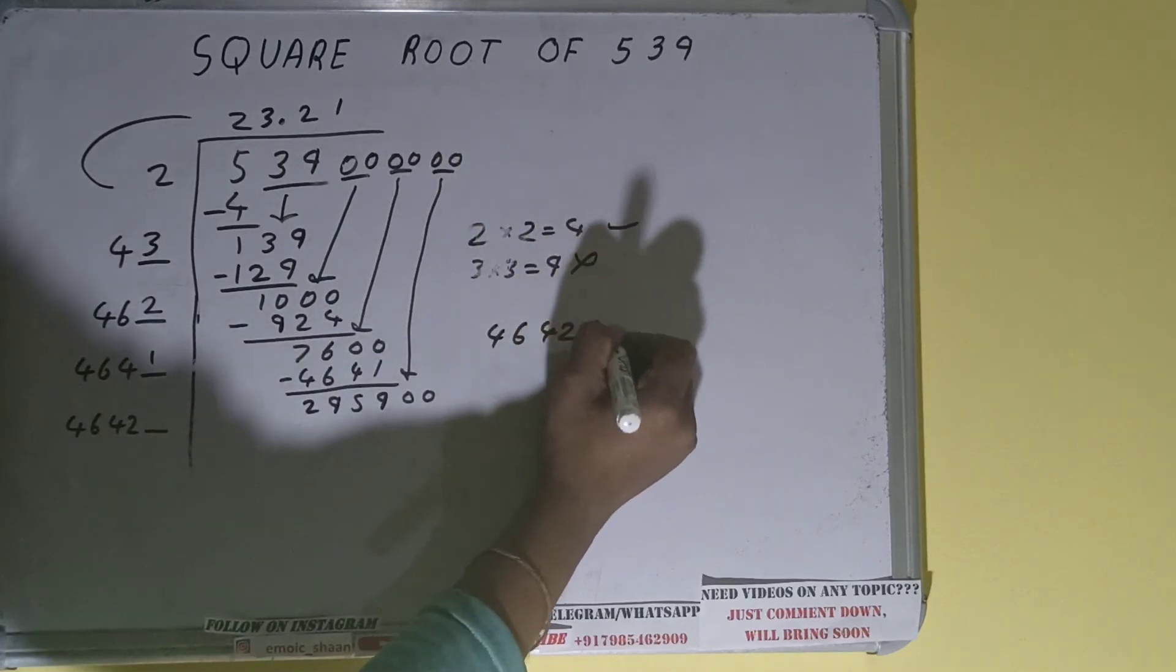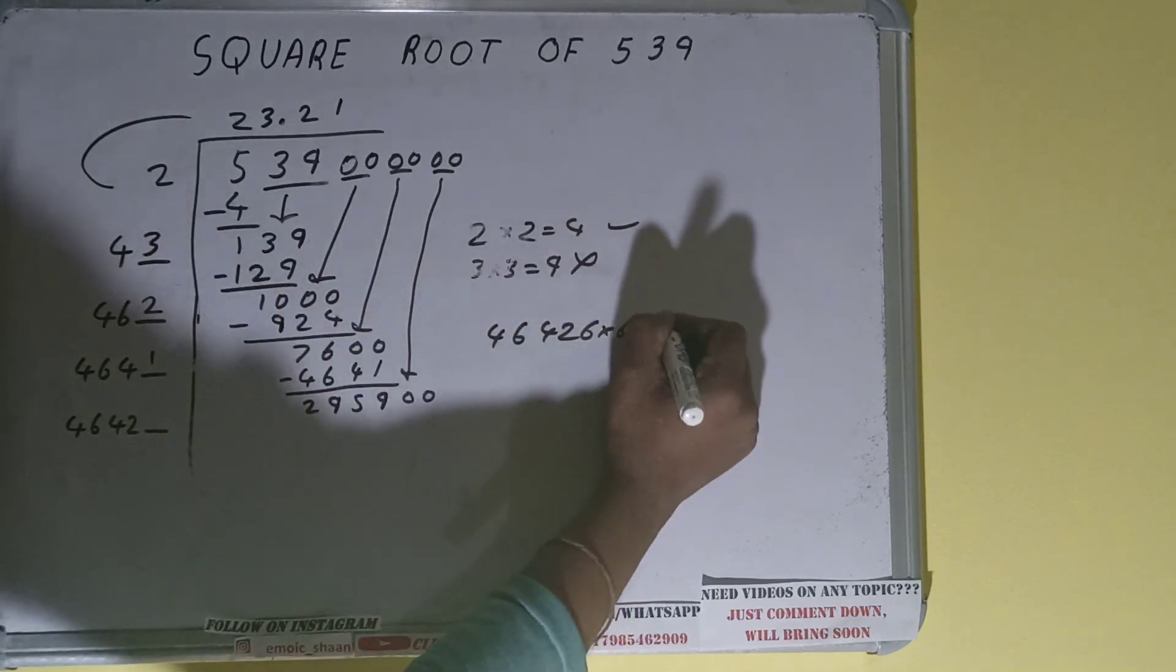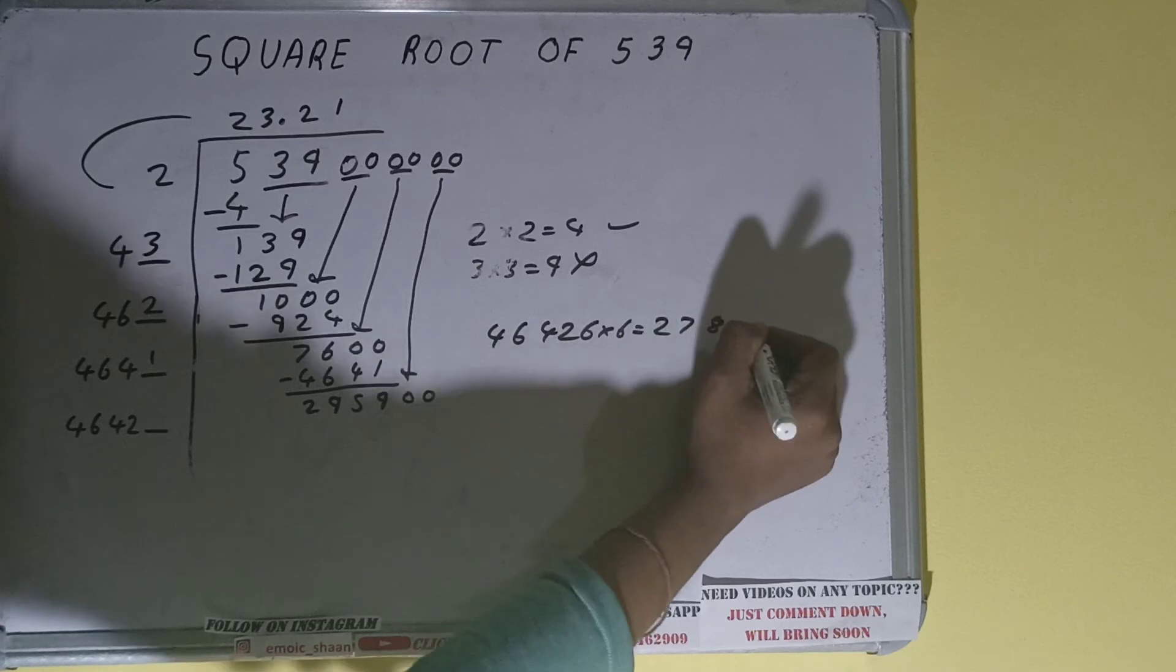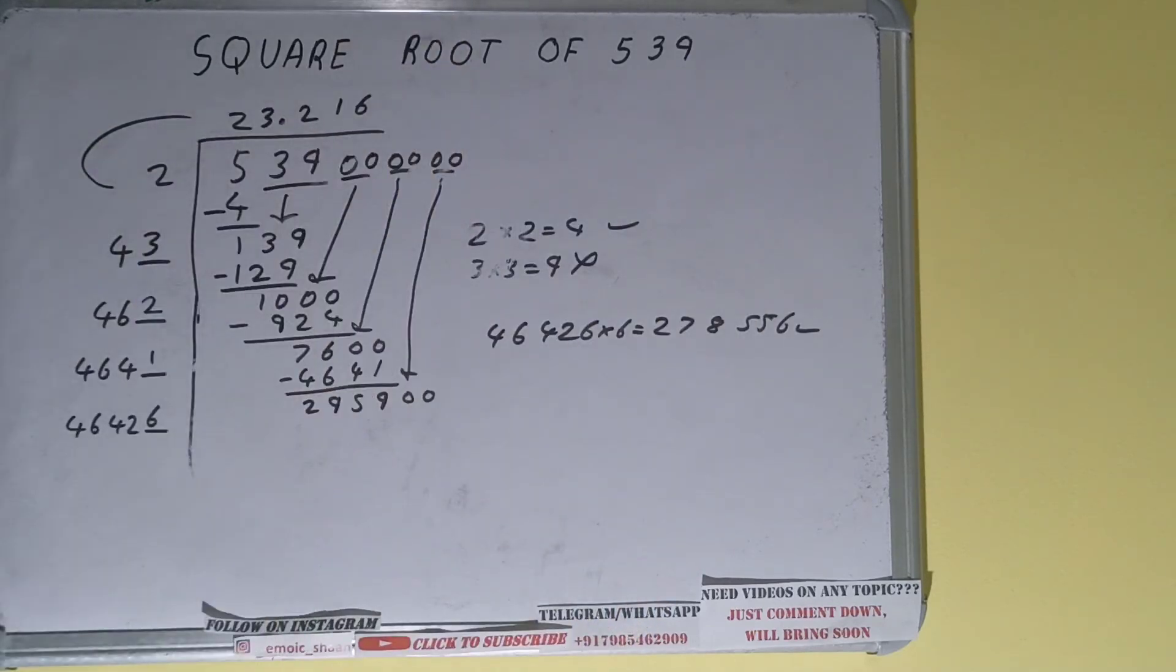So 4642, six into six we can try. It will be 278556. That is good to take. So six here and six here, but we don't need...